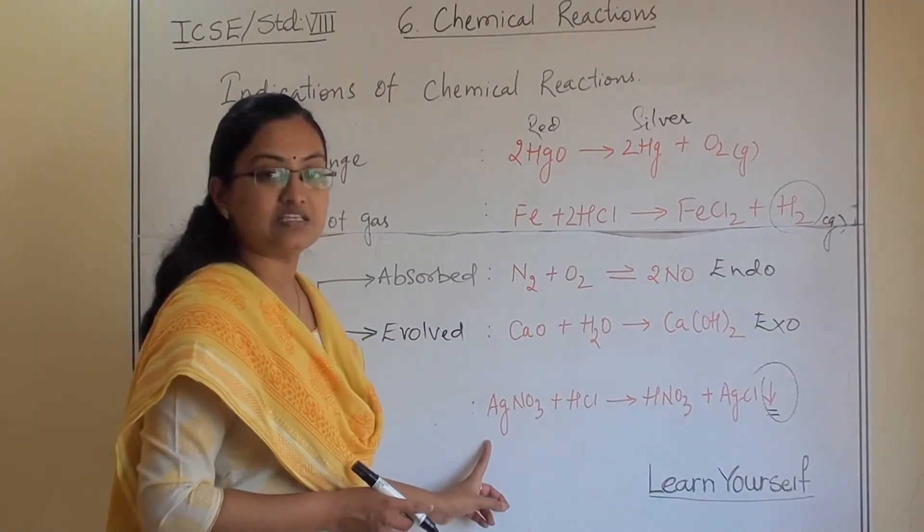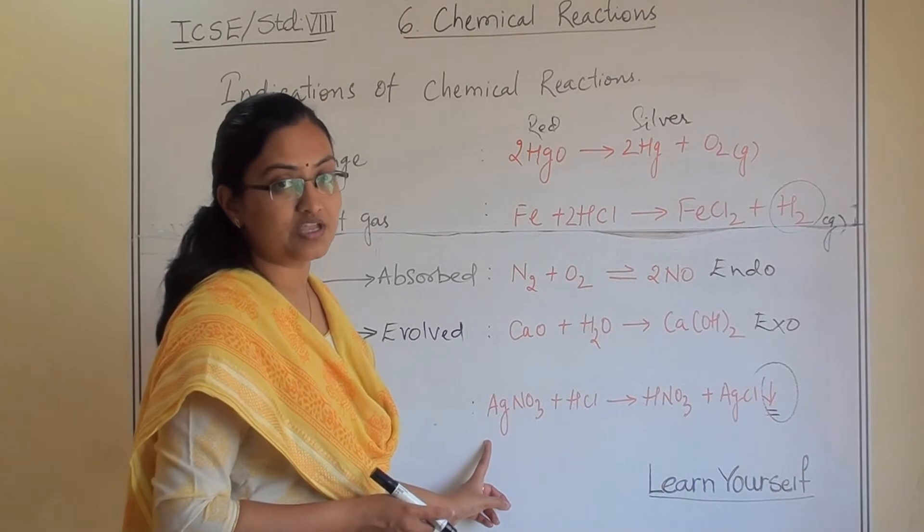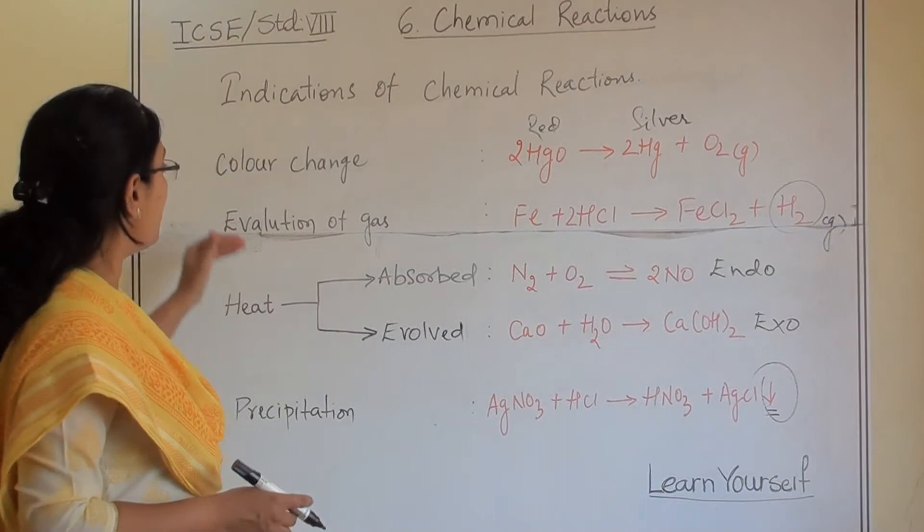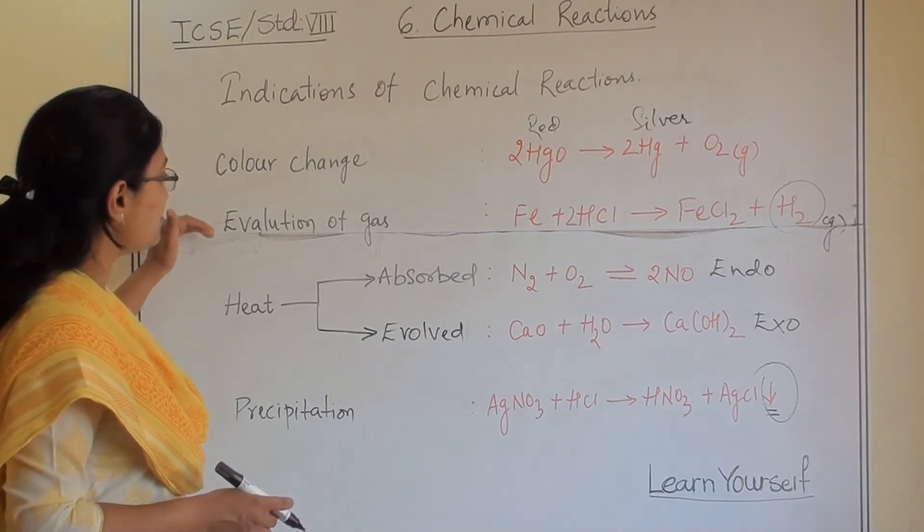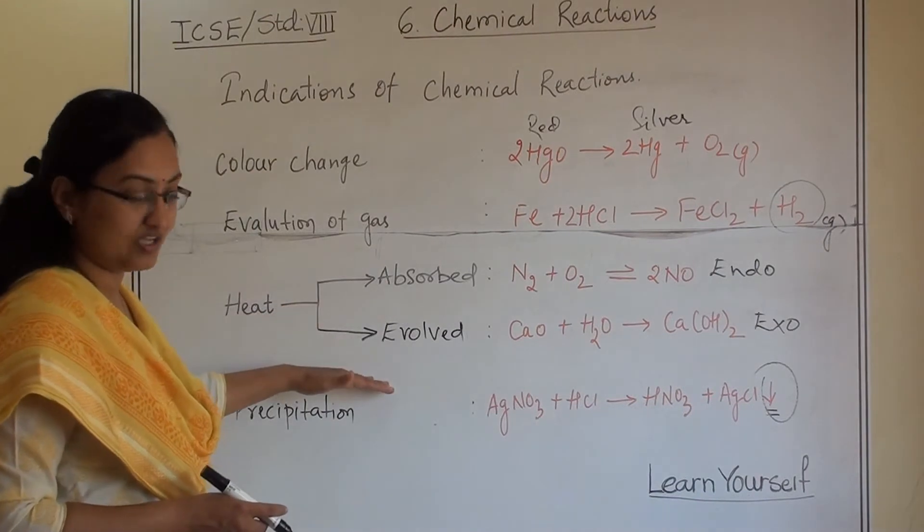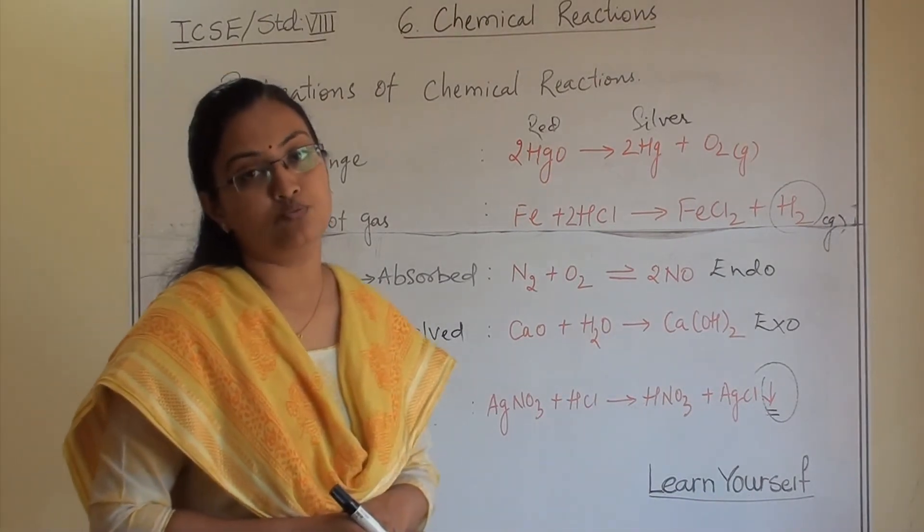So this reaction is an example of precipitation reaction. So there are four indications in terms of color change, evolution of gas, heat either getting absorbed or evolved, and precipitation formation.